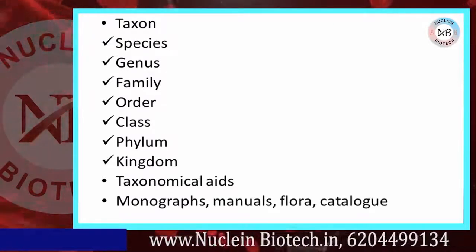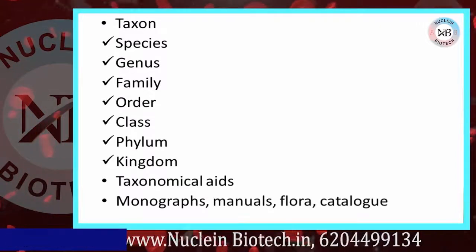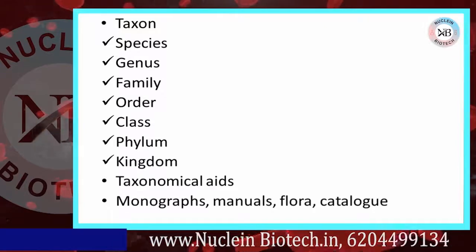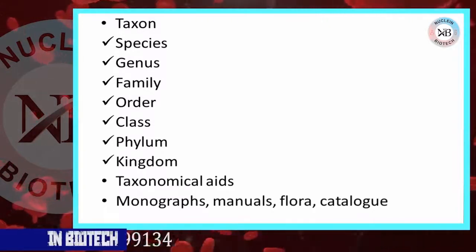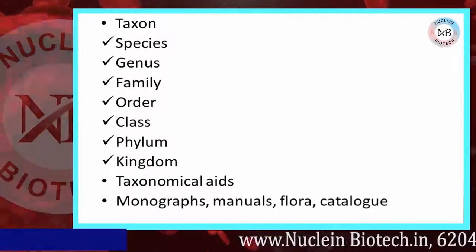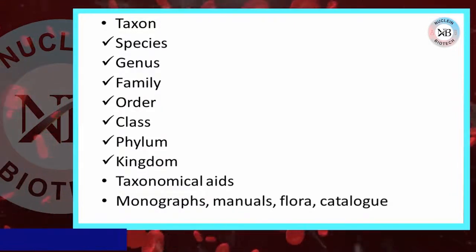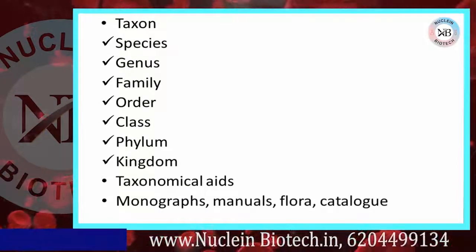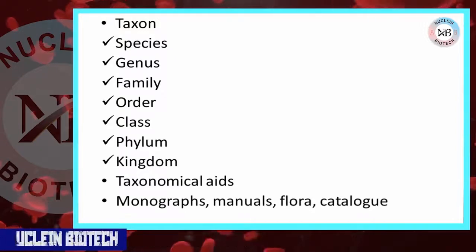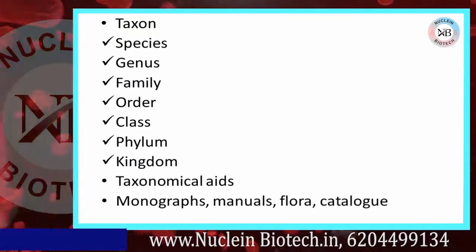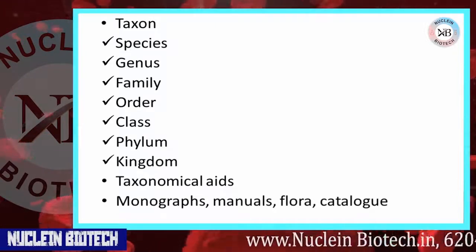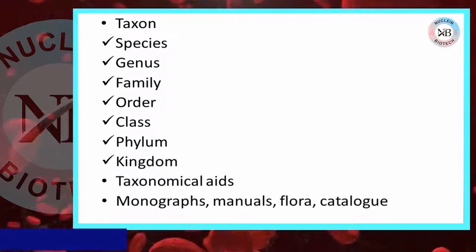Order includes a few related families. Family is an assembly of related genera. Genus is a gathering of related animal categories having similar characters. Species is the essential unit in classification — it refers to individuals of any animal group that are closely related, descended from a common ancestor, and can interbreed to produce fertile offspring.